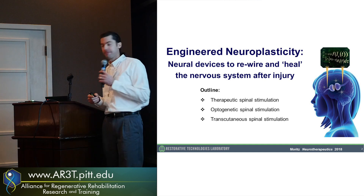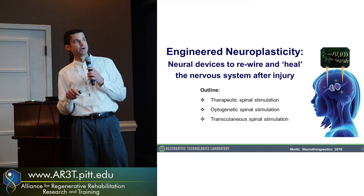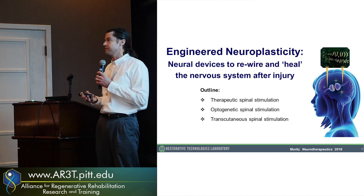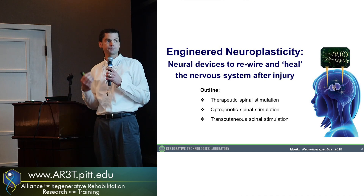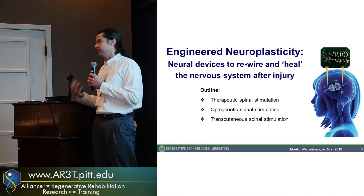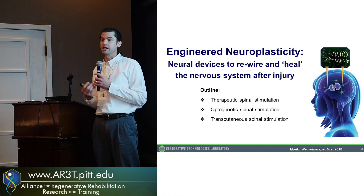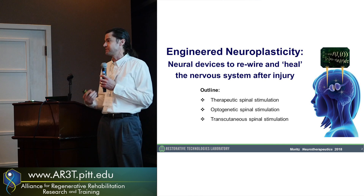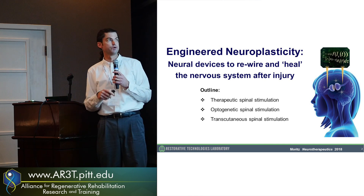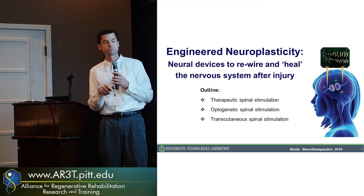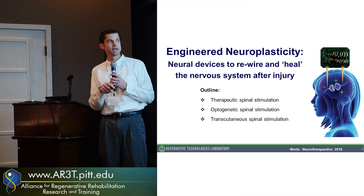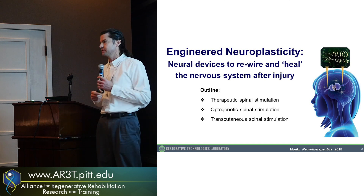If we imagine that we have electrodes at multiple sites in the brain or the spinal cord, we might be able to pair the activity of natural activity and stimulation in order to actually change synaptic strength. We think this is what happens naturally during rehabilitation. The question is, can we enhance that if we pair rehabilitation with electrical spinal stimulation, or with optogenetic spinal stimulation?